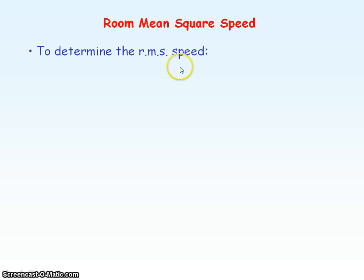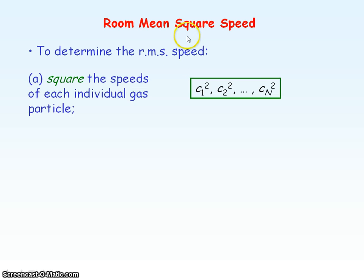To determine the RMS speed, we first need to take the square of the speeds of each individual gas particle. So in this case we have n particles, all at different speeds, and we square them.